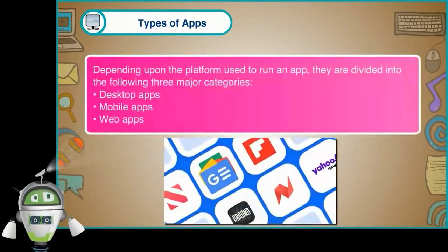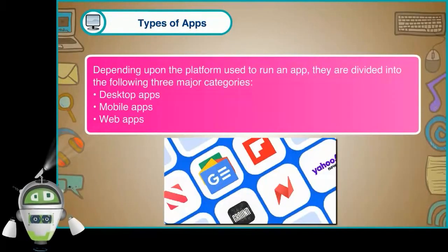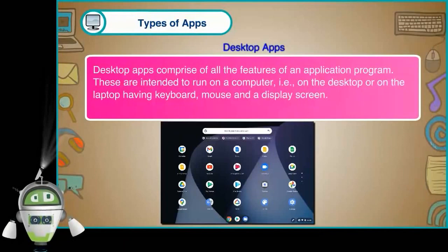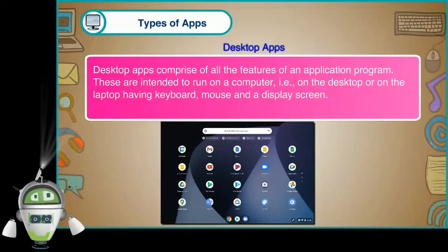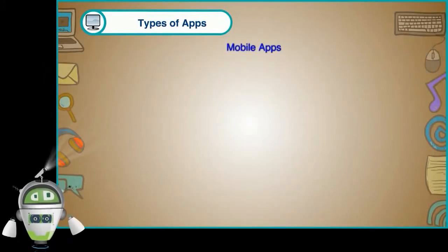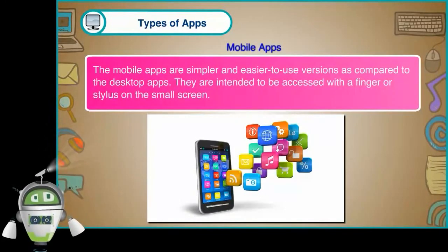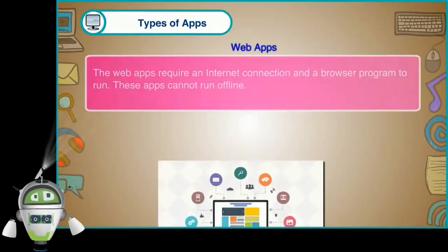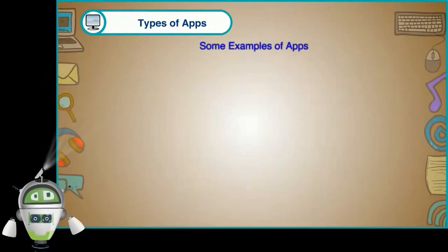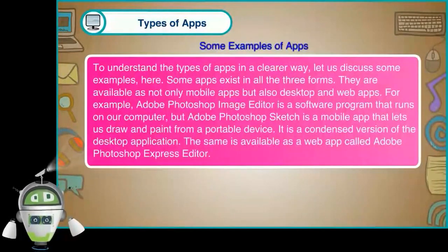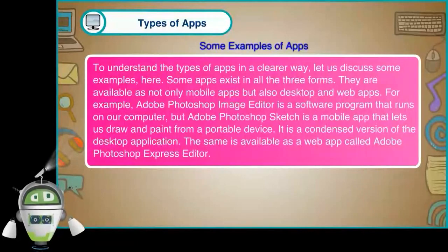Types of apps. Depending on the platform used to run an app, they are divided into three major categories: desktop apps, mobile apps, and web apps. Desktop apps comprise all the features of an application program and are intended to run on a computer, that is, on the desktop or laptop, having keyboard, mouse and a display screen. Mobile apps are simpler and easier-to-use versions as compared to desktop apps, intended to be accessed with a finger or stylus on a small screen. Web apps require an internet connection and a browser program to run. These apps cannot run offline. Some apps exist in all three forms — available as mobile apps, desktop apps and web apps.